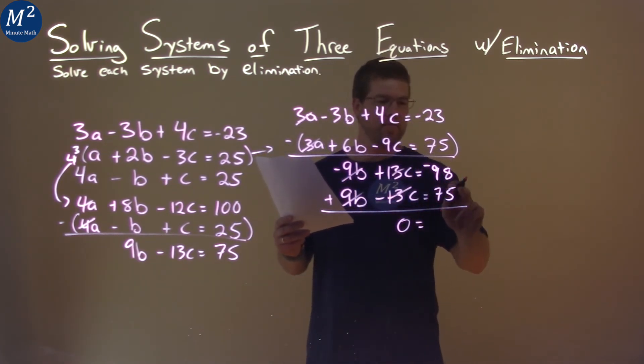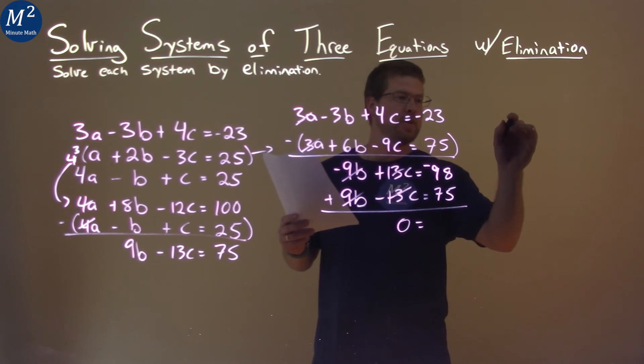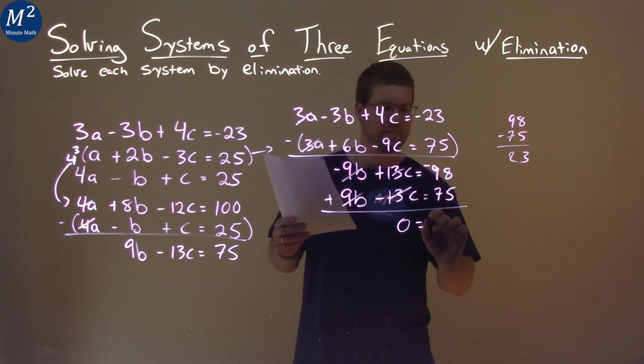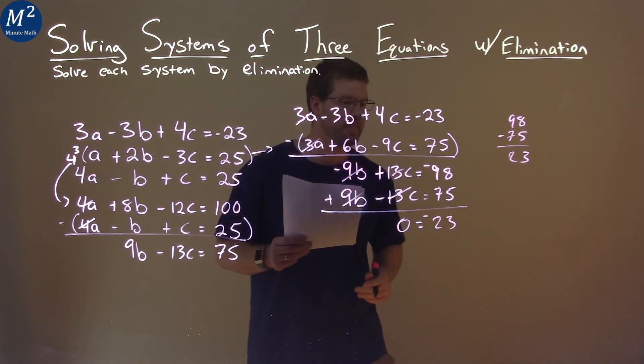Negative 98, it's almost like 98 minus 75, but you know it's going to be negative. 8 minus 5 is 3, 2, 23, and it's a negative 23 there.